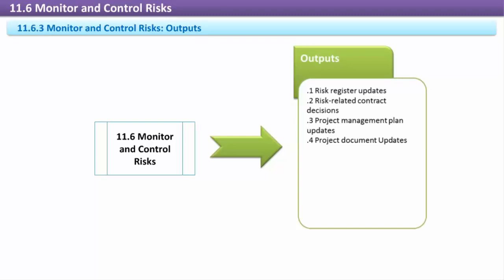Project Management Plan Updates: Risk monitoring and control can result in updates to the project management plan or any of its components. The project management plan details how the project will be executed, managed, and controlled, including many subsidiary plans as to how changes to major project components such as scope, budget and schedule will be handled, and how important factors such as communication, risk, and quality will be managed. The project management plan is the key source of information relating to project management for the project. This process can also result in changes to project documents beyond just the project management plan.